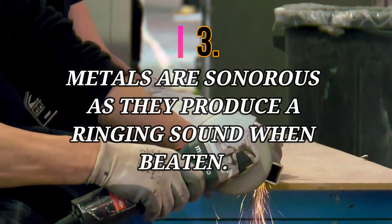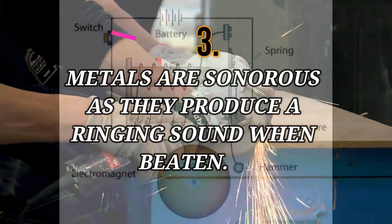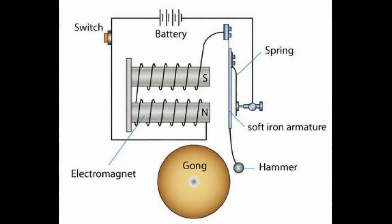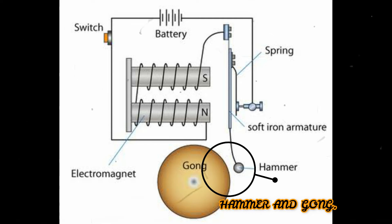Metals are sonorous as they produce a ringing sound when beaten. Electric bell is a most common example. If you closely observe it, the hammer hits the metal gong when the electric bell is on, thus the ringing sound is produced.